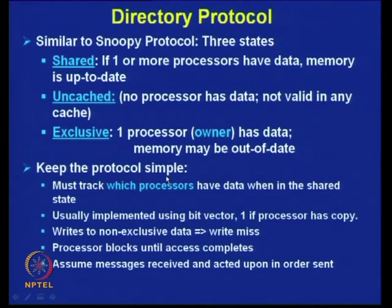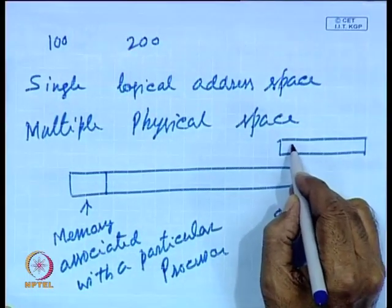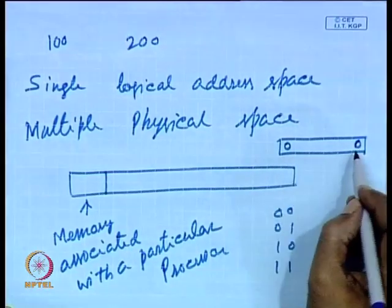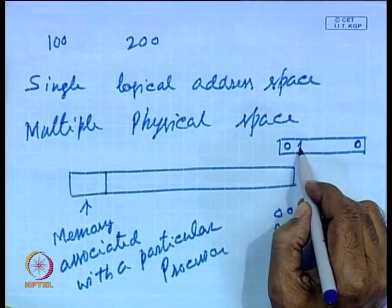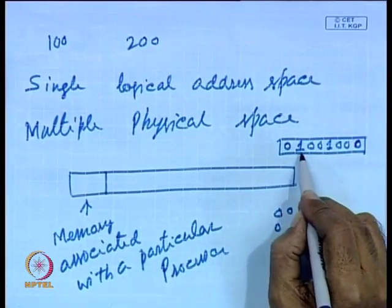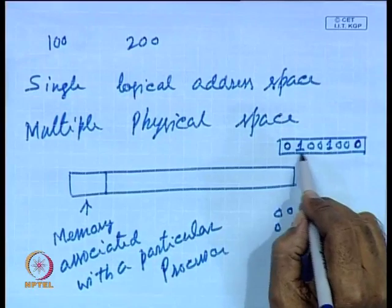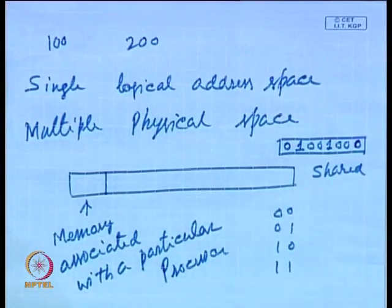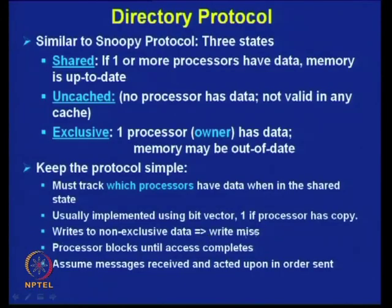To keep the protocol simple, it must track which processors have data when in the shared state — usually implemented using a bit vector. If you have 8 processors, you have 8 bits, where each bit corresponds to a processor. Whenever a particular processor copies the data, that bit is set to 1. If more than one bit is set, the same copy of data is held by more than one processor, meaning it is in the shared state. This bit vector signifies which processor has the copy.